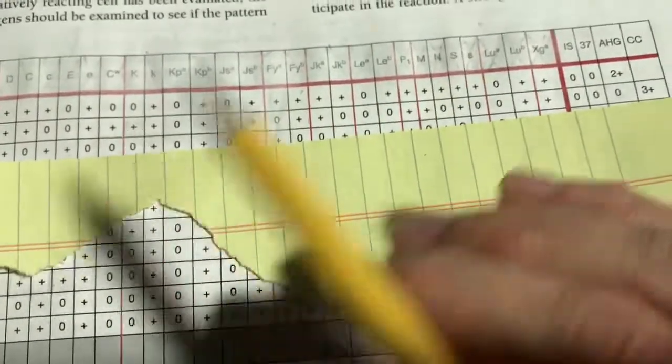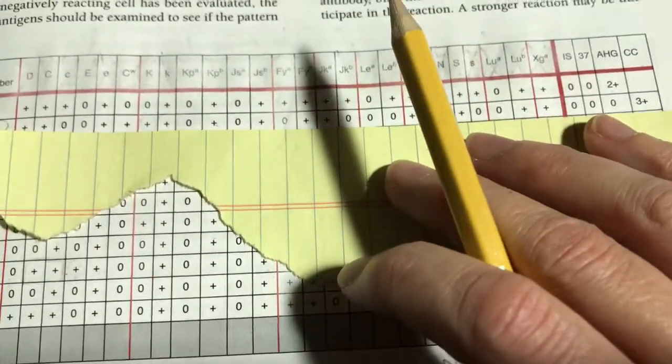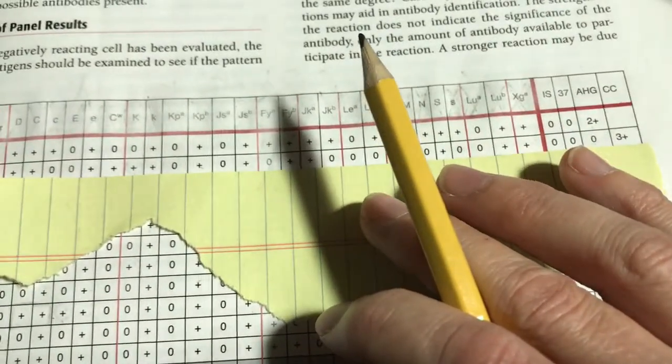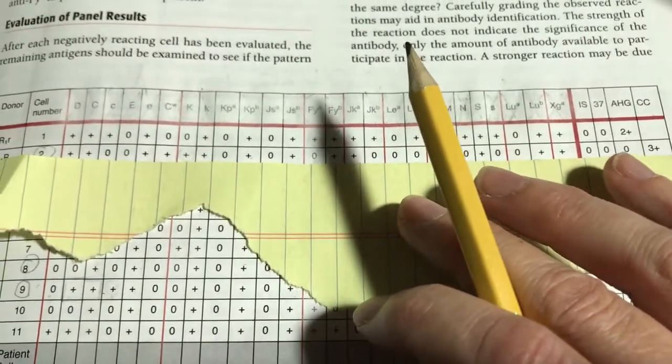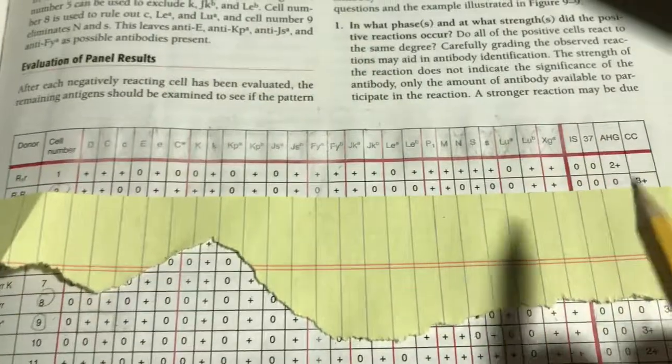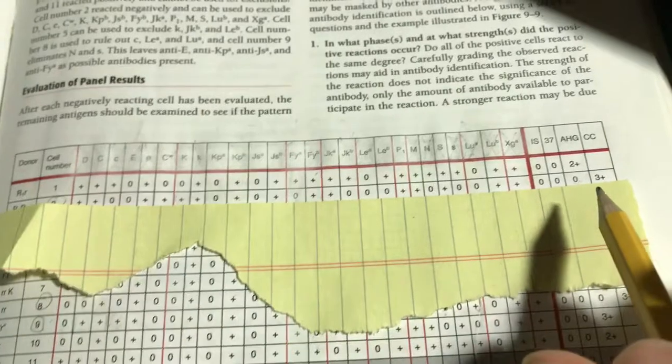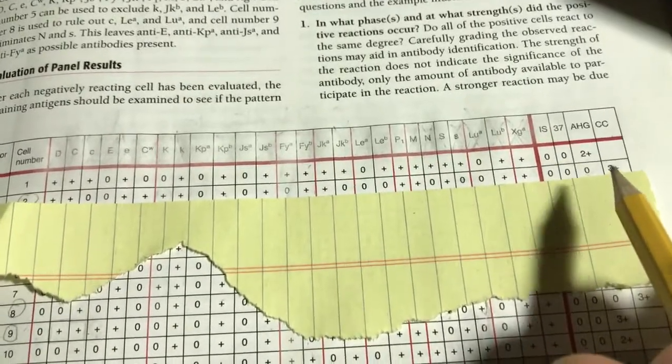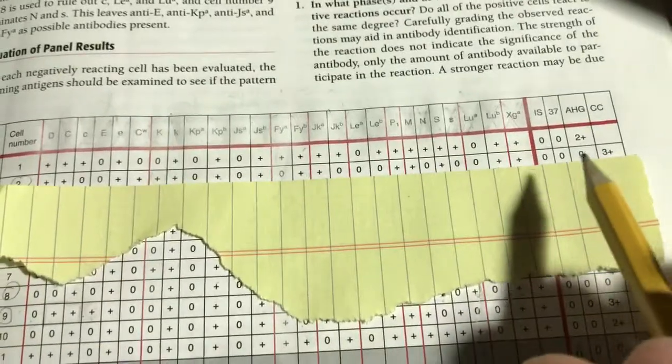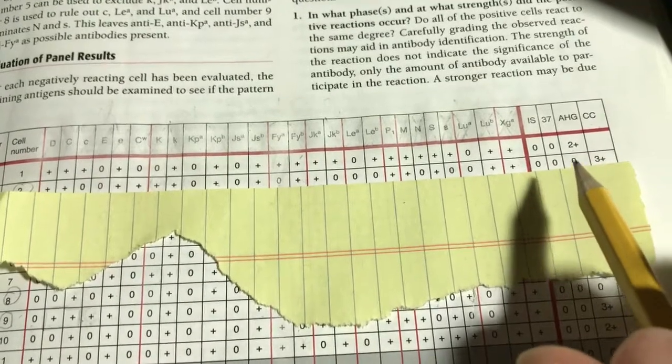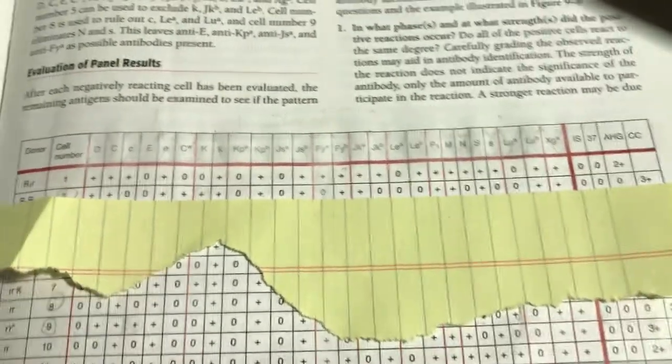I included gel here because they do occasionally exhibit dosage, the antibodies. Keep that in mind as you're ruling out antibodies. With a negative reacting cell, you either need two reactions that are negative with heterozygously expressed cells or one time with a homozygously expressed cell because it's strongest, it's weakest if it's heterozygously expressed.